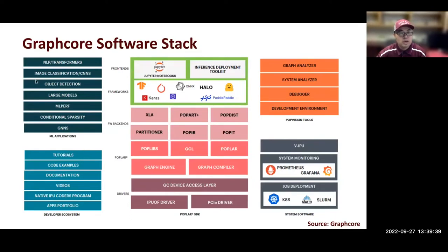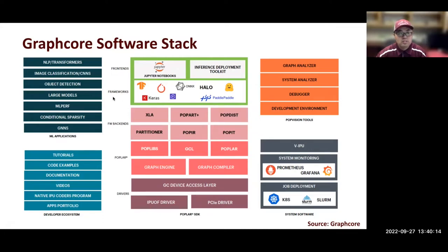The GraphCore software stack supports different machine learning applications such as natural language processing, image classification, and object detection. It includes a healthy developer ecosystem with tutorials, code examples, and documentation. It supports deep learning frameworks including TensorFlow, Keras, PyTorch, ONNX, and PaddlePaddle. The popular SDK we'll be using today supports all of these. GraphCore also developed PopVision Graph Analyzer — you can enable environment variables to get report files and visualize memory usage throughout the lifetime of your program, helping identify which layers utilize the most memory.